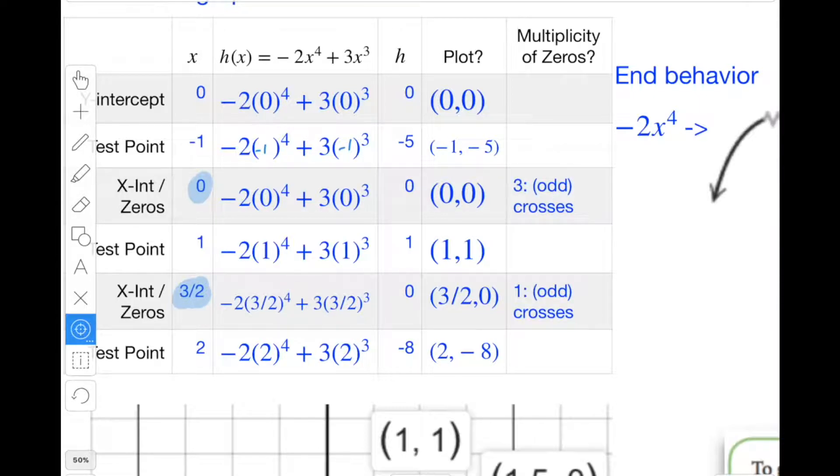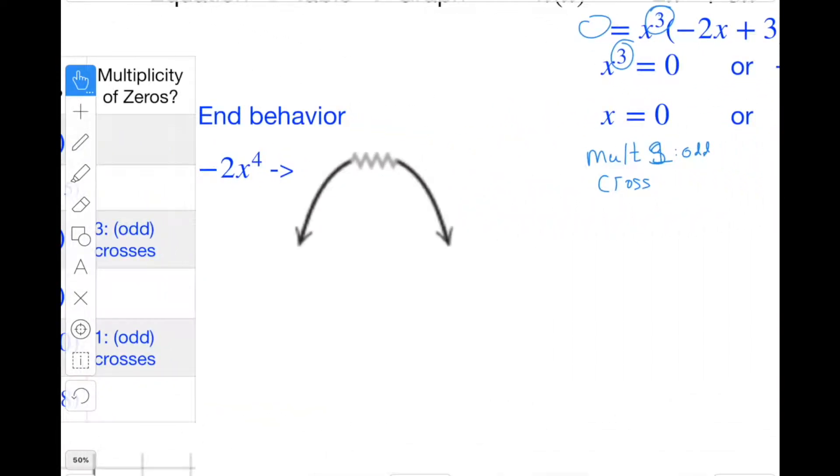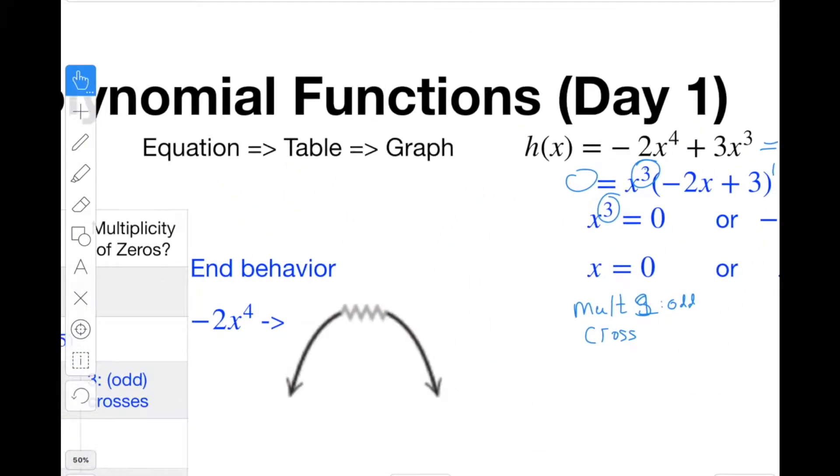Another thing that we need to think about is end behavior. So the leading term is negative 2x to the fourth. Look at that right here. And because it is to the fourth, we know that it's going to look like a parabola, like x squared. And then because it's negative, it's going to actually look like negative x squared, going up and down. We don't know what's going on in the middle from just the first term, but the first term will definitely tell us what's happening eventually as it goes to negative infinity to the left and negative infinity to the right.